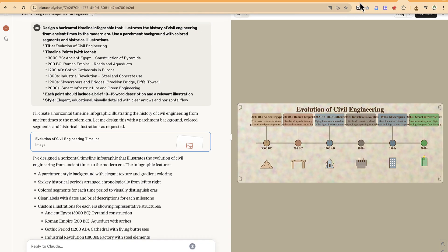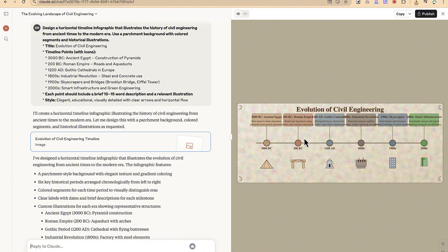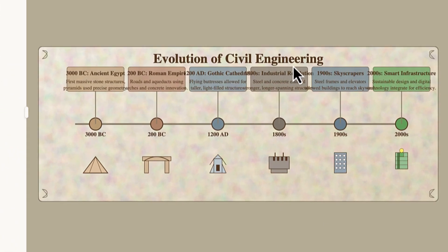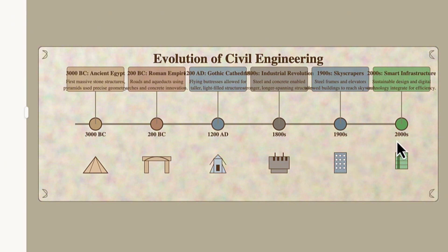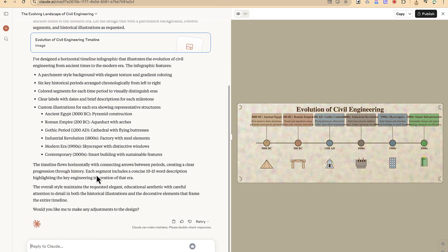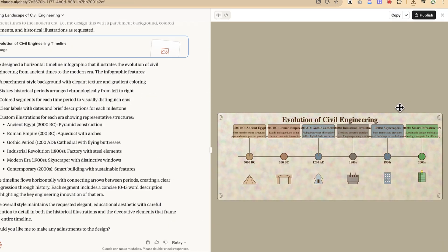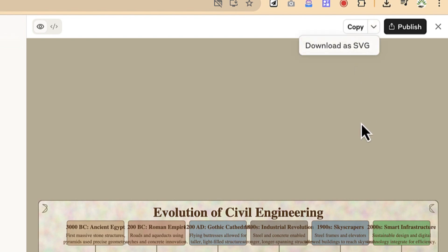Surprisingly, Claude has created a very wonderful infographic for us. You can see 'Evolution of Civil Engineering' as the title, and down here the years and developments are shown: 3000 BC, 200 BC, 1200 AD, the 1800s, 1900s, and 2000s. The icons represent the transformation through each era, and there's a brief description of the timeline evolution. You can download this as SVG, copy and paste it, or publish it as well.